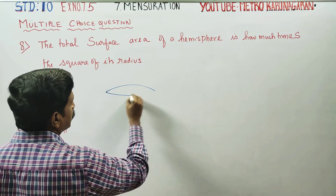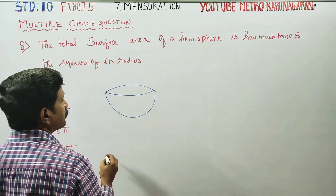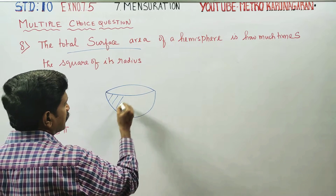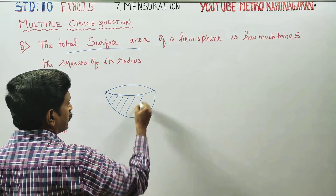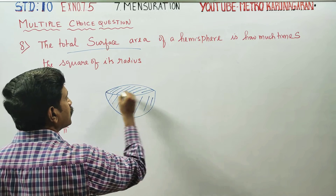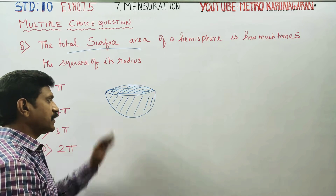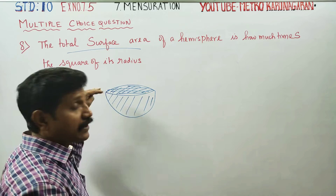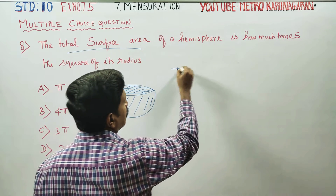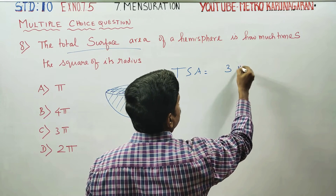Hemisphere — that means you don't have a sphere. The total surface area of hemispheres, hence the total surface area of hemispheres to the top of the hemisphere, is 3πr². The total surface area is 3πr².